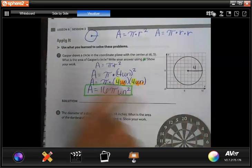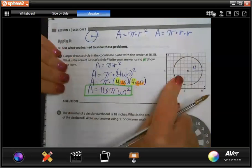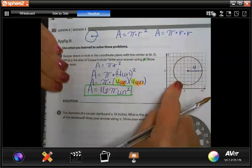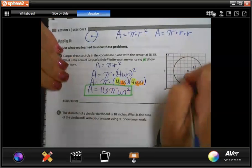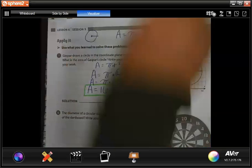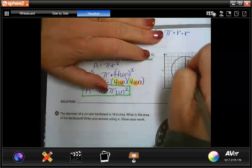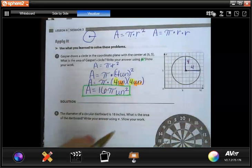So if you look at this first problem, here's the circle that Gaspar drew. The first thing we did is we found the radius and we started at the center and we went across to the edge. Now, look at this. It doesn't matter if you go there or here. No matter what, your radius is always four.